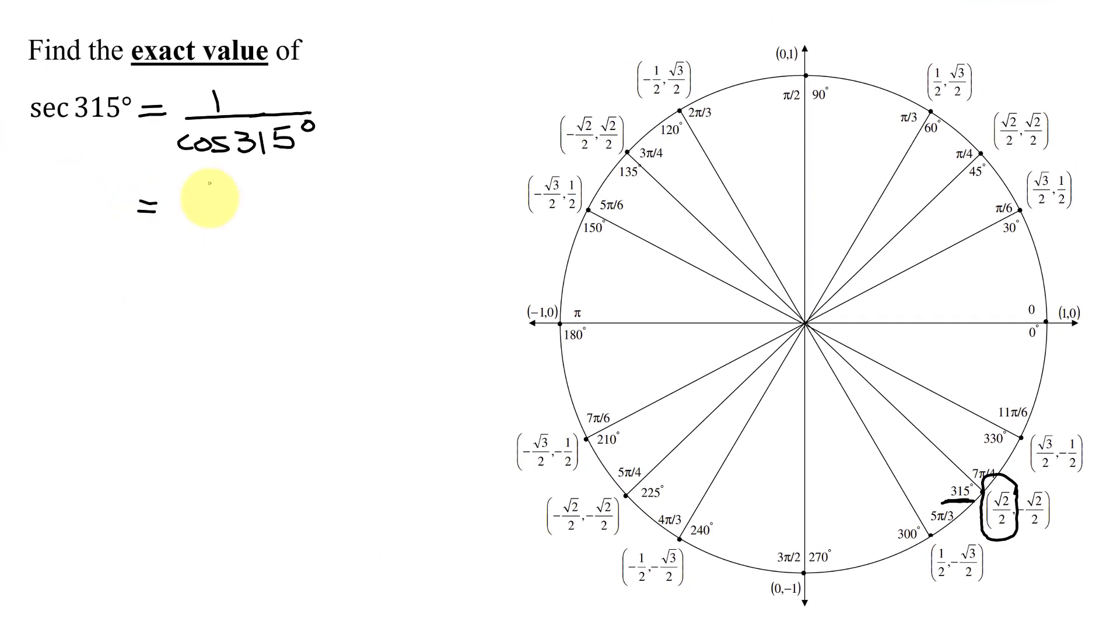So the secant of 315 degrees is 1 divided by the square root of 2 over 2. And now all I have to do is simplify this expression. So I'm going to get the 1 from the numerator. And then how do you divide by a fraction? You multiply by the reciprocal.